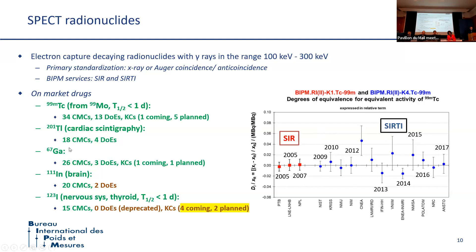There is also good achievement of international equivalence for Thallium-201, Gallium-67, and Indium-111, supported by a full number of degrees of equivalence. Concerning Iodine-123, which is used to image the nervous system and the thyroid, there are today 15 CMCs claimed by laboratories but no current degree of equivalence to support these capabilities, as existing degrees of equivalence were valid for a period of 20 years. We will soon re-establish the demonstration of equivalence by key comparison, with three coming results to be soon published and two other planned comparisons.